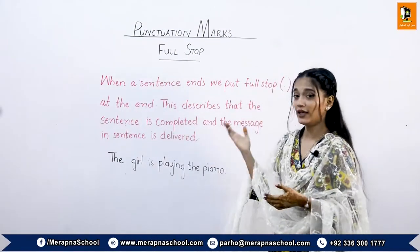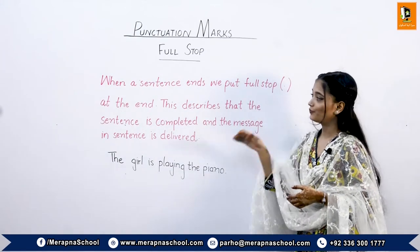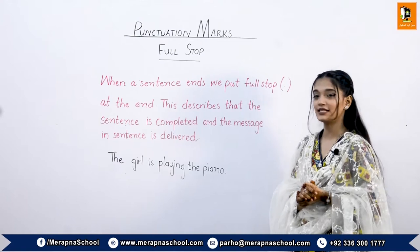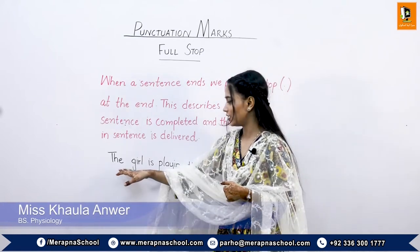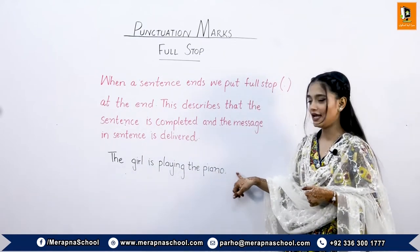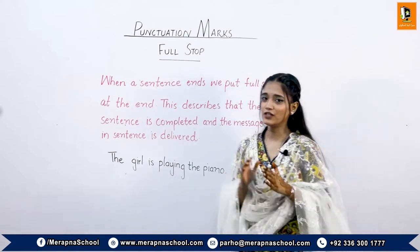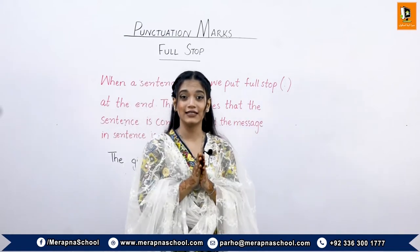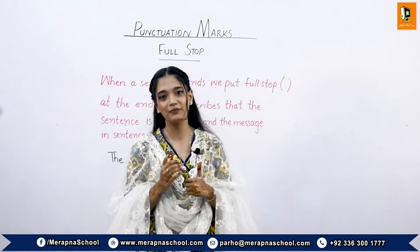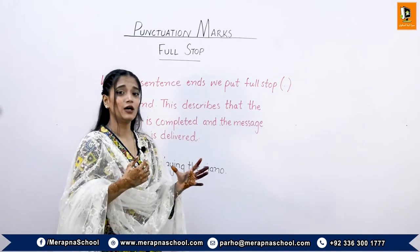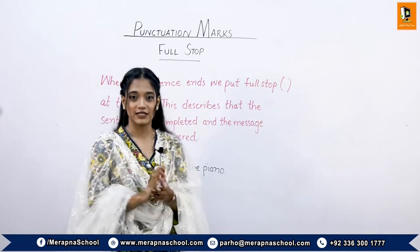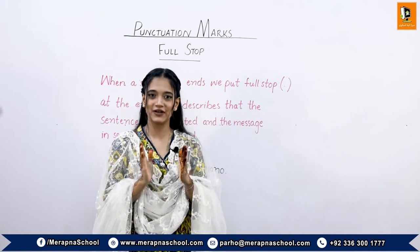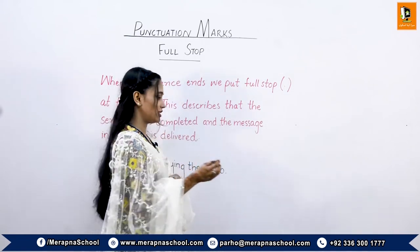We will talk about the full stop. When a sentence ends, we put a full stop to show that the sentence is completed and the message is delivered. For example, 'The girl is playing the piano.' The full stop is drawn like a dot. When we make the dot bigger it becomes a period — it's not a full stop. To make a full stop, we just touch the pencil to the page.